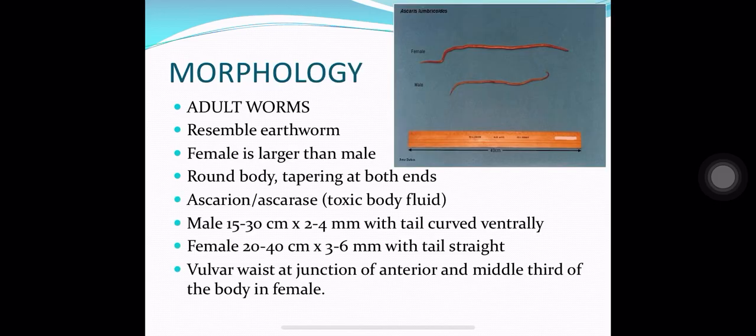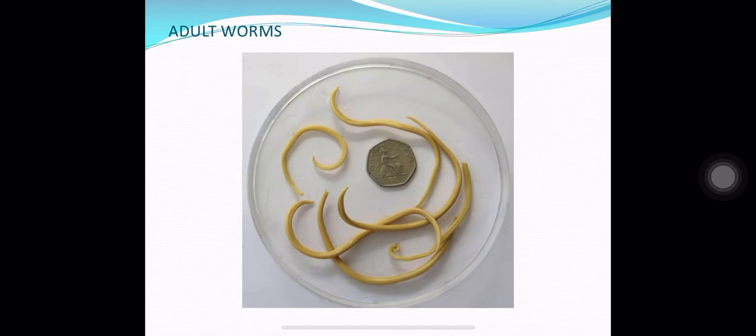Regarding the morphology of adult worms, they resemble the Earth Worm. The females are larger than the males. They have a round body tapering at both ends. The body fluid of Ascaris Lumbricoids is toxic and is known as Ascarion. The male worms are 15 to 30 cm long and have a tail curved ventrally. The female worms are 20 to 40 cm long with a straight tail.